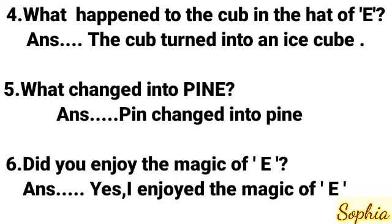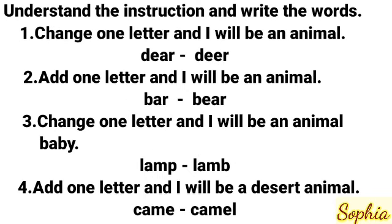Next, understand the instruction and write the word. Number one: Change one letter and I will be an animal. D-E-A-R — here you change one letter: D-E-E-R. Dear changed to deer. Number two: Add one letter and I will be an animal. D-E-A-R — B-E-A-R. Dear changed to bear.